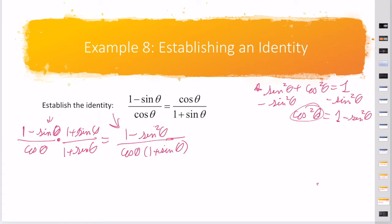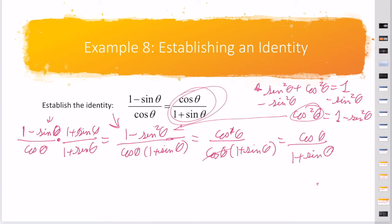Let's substitute this back in. I have cos² θ over cos θ times 1 plus sin θ. One of my cosines is going to cancel out, so I'm left with cos θ over 1 plus sin θ as desired.